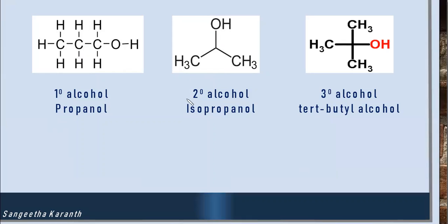Simple examples for primary alcohol are methanol, ethanol, propanol, etc. For secondary alcohol, isopropanol is the example — the OH group is attached to a secondary carbon atom. For tertiary alcohol, the OH group is attached to a tertiary carbon atom bearing three R groups; the example is tertiary butyl alcohol.